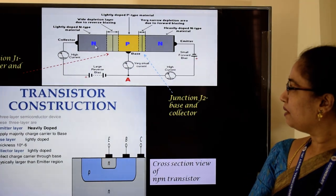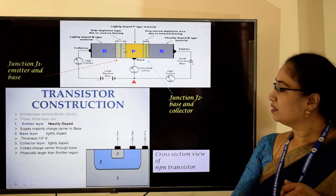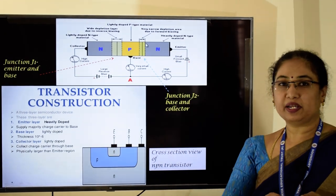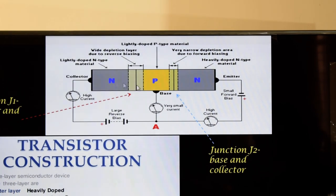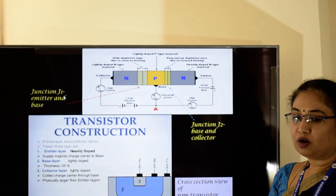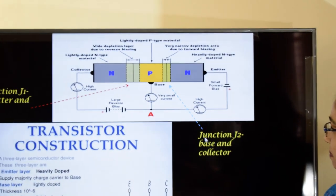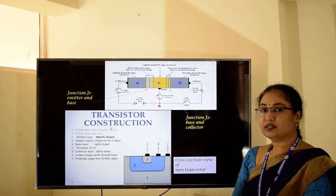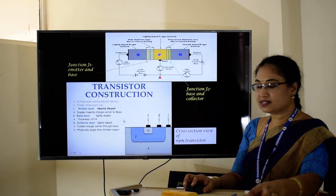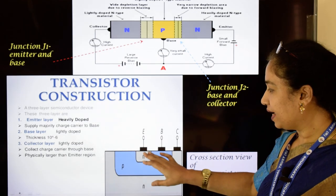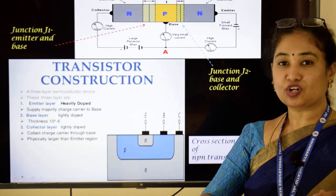In the NPN transistor, between N and P there is a depletion region due to diffusion, and again between P and N there is another depletion region. So the transistor has two junctions: one between N and P (called the emitter junction) and one between P and N (called the collector junction). When we look at the structure of the transistor, we see three layers: N, P, and N.